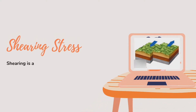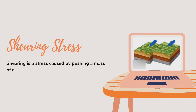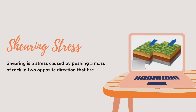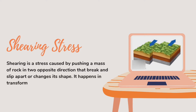The last type is shearing stress. Shearing is a stress caused by pushing a mass of rock in two opposite directions, causing it to break, slip apart, or change its shape. It happens at transform boundaries.